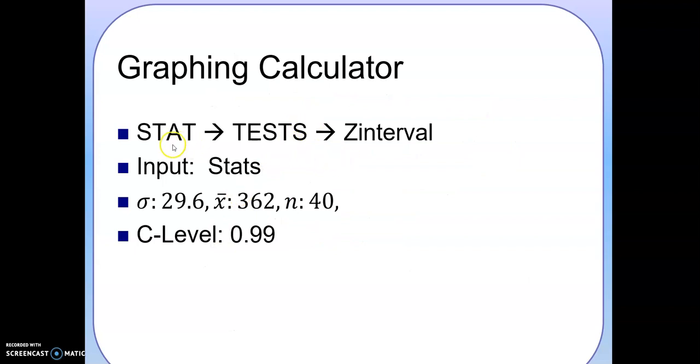If you have the graphing calculator, you do the same thing: stat, test, Z interval, input stats. You have the standard deviation, the mean, number of samples, and 0.99 this time because they want 99% confidence.